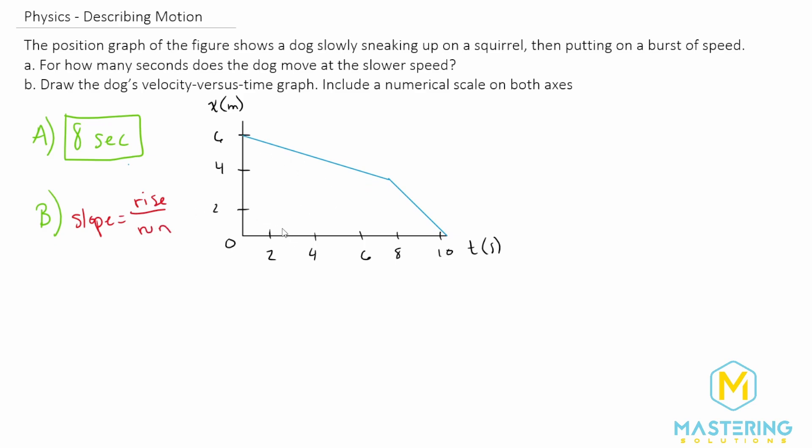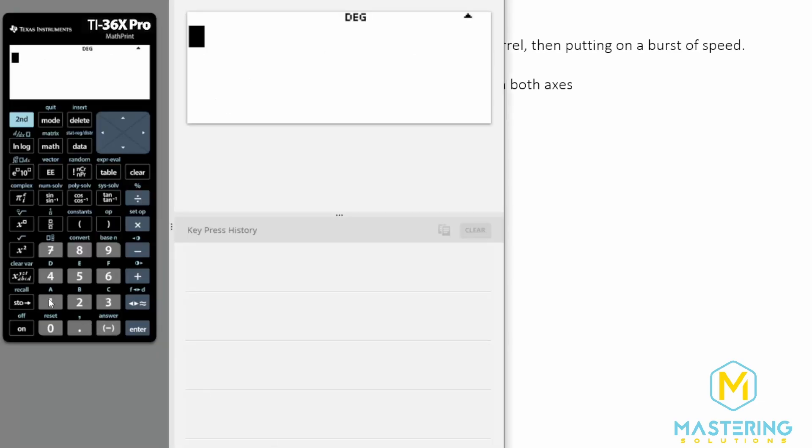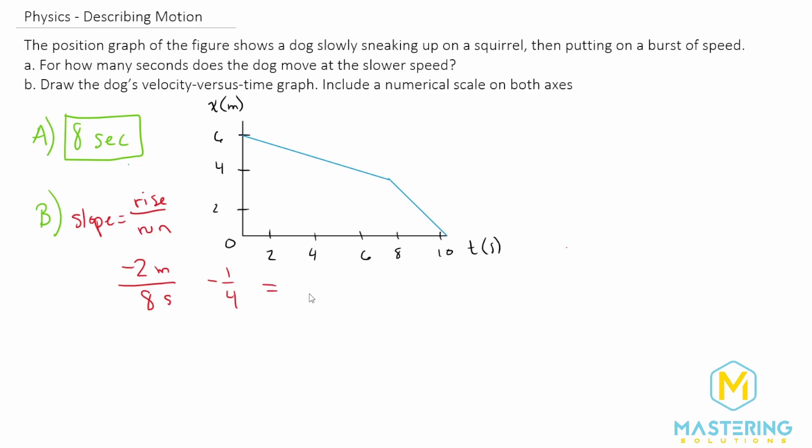So if we look at this first section, the rise is it's going down two. So we have negative two meters. And then the run is it's from zero to eight seconds, as we already found. So that is a positive eight seconds. Now, if you look at this, I put the units on purpose, because it helps us see that we're trying to find the velocity. And now we have meters per second. So we know that we've done this correctly interpreting the graph. Now we can plug this into the calculator, or we could just simplify it, it's going to be a negative one fourth, or it's going to be negative 0.25 meters per second. So the first velocity is negative 0.25 meters per second for the slower speed for the dog.